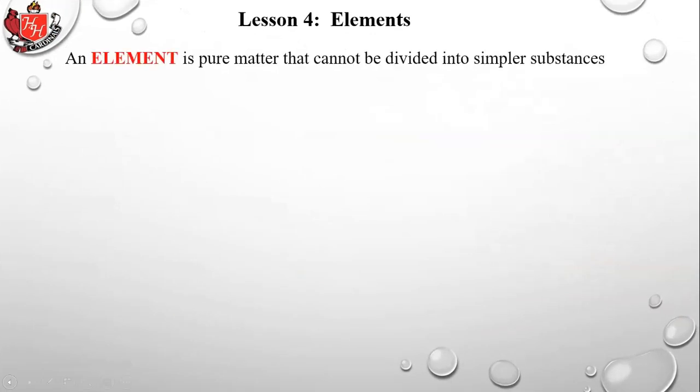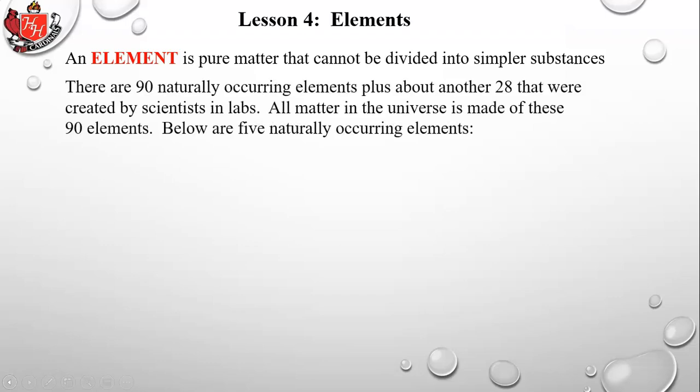An element is pure matter that cannot be divided into simpler substances. There are 90 naturally occurring elements plus about another 28 created by scientists in labs. All matter in the universe is made of these 90 elements.